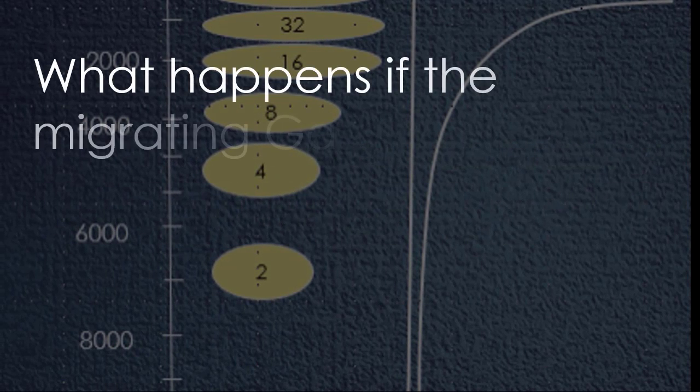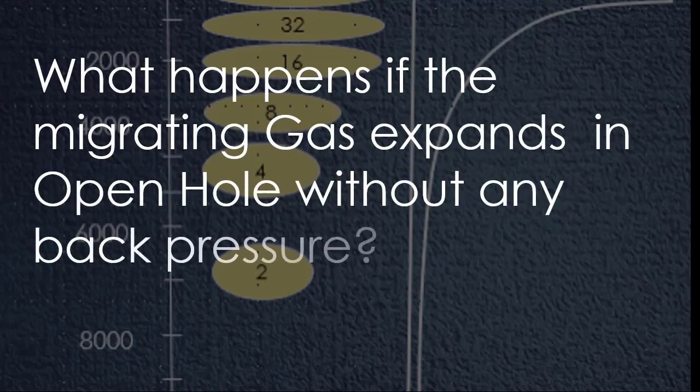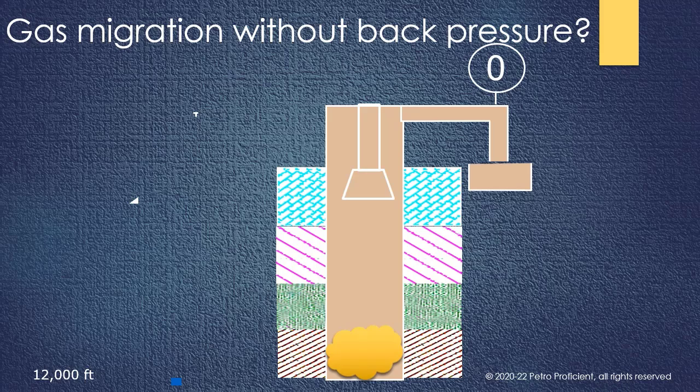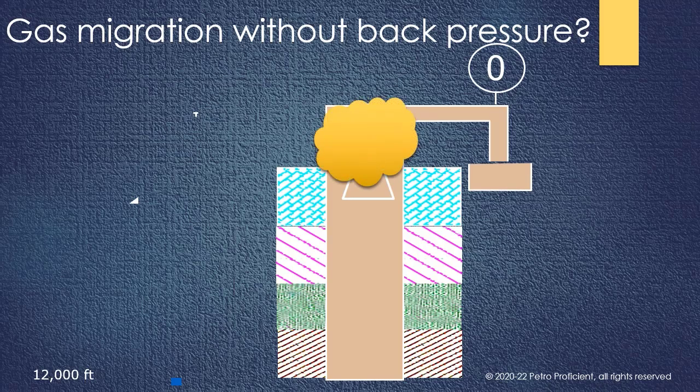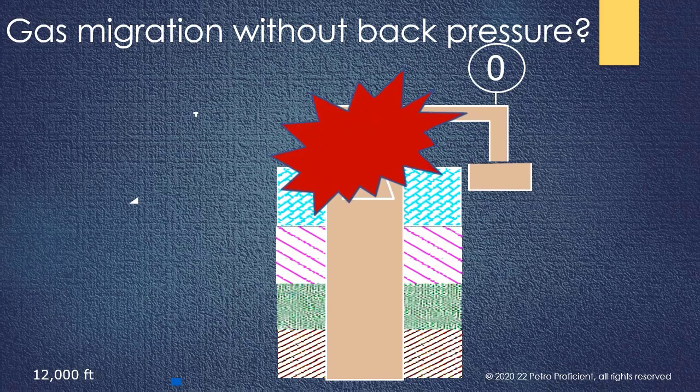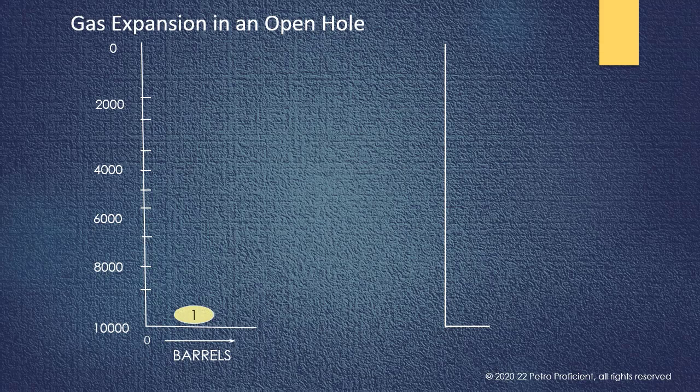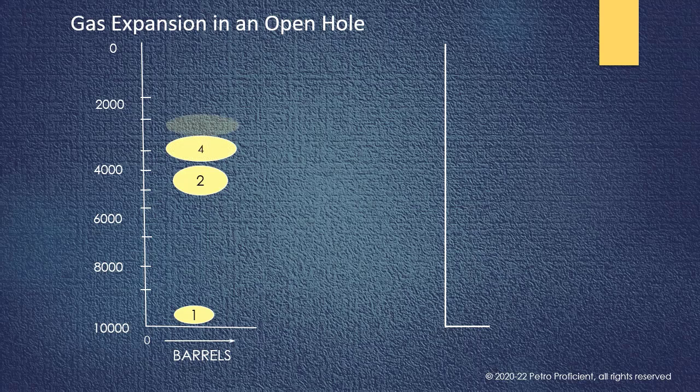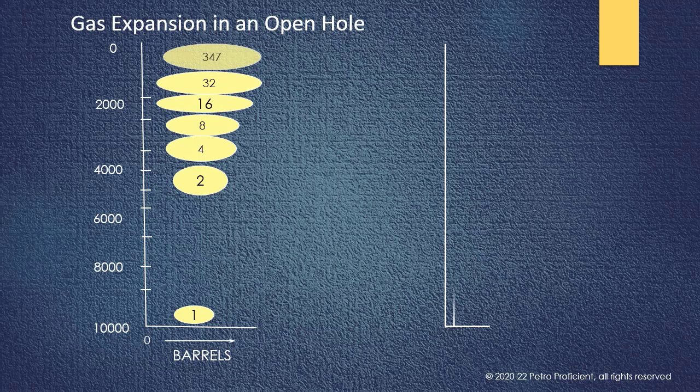What happens if the migrating gas expands in open hole without any back pressure? Gas is a compressible fluid. It is important to understand the expansion process of the gas. If no back pressure is applied and gas is allowed to expand freely, as per the gas law, one barrel of gas influx at 10,000 feet depth will expand to four barrels when the gas reaches halfway. And by the time gas reaches surface, an estimated 347 barrels of expansion would have occurred.